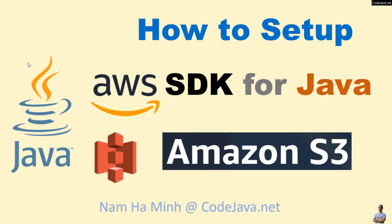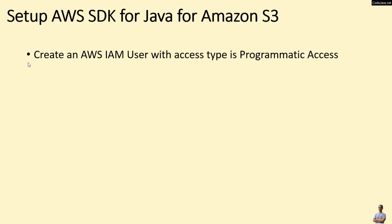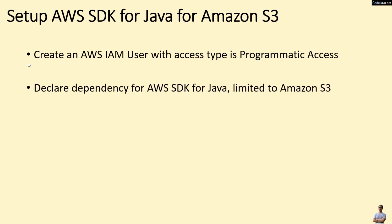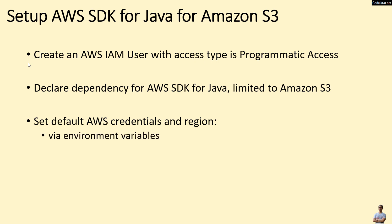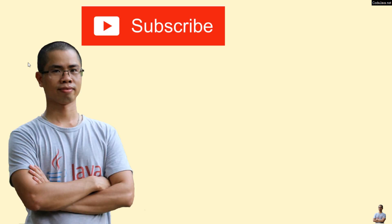So far you have learned how to set up AWS SDK for Java for Amazon S3. To sum up: create an AWS IAM user with access type 'Programmatic Access', declare the dependency for AWS SDK for Java limited to the Amazon S3 API, and set the default AWS credentials and region via environment variables. If you like this video, please subscribe to my channel, like, comment, and share. Thanks for watching!